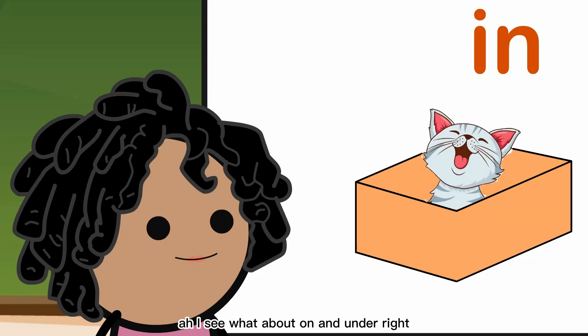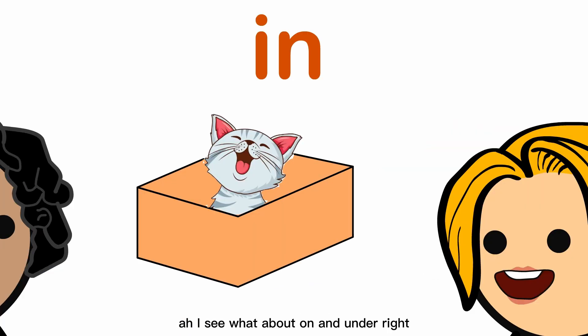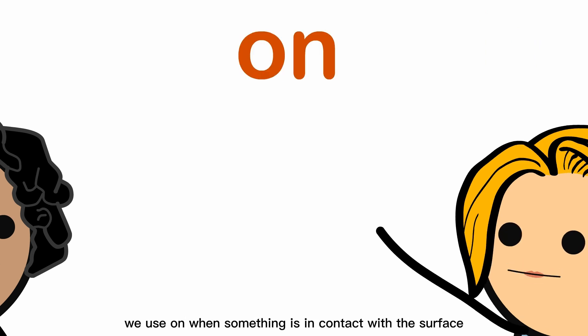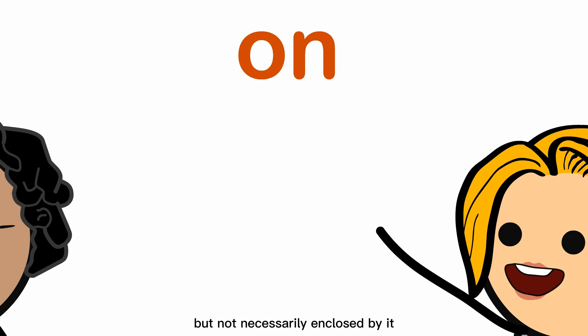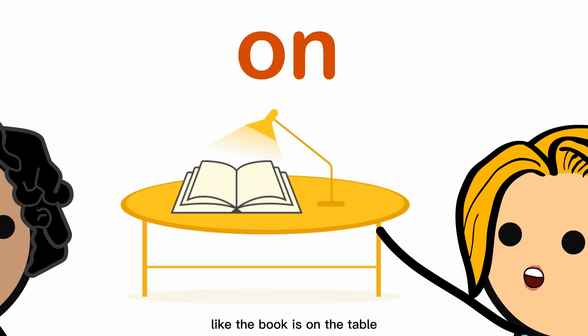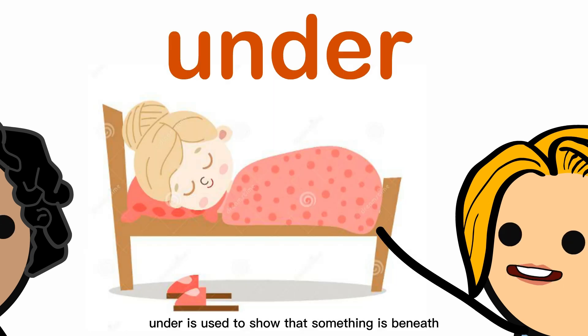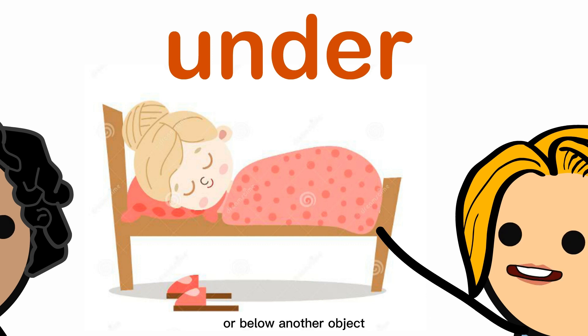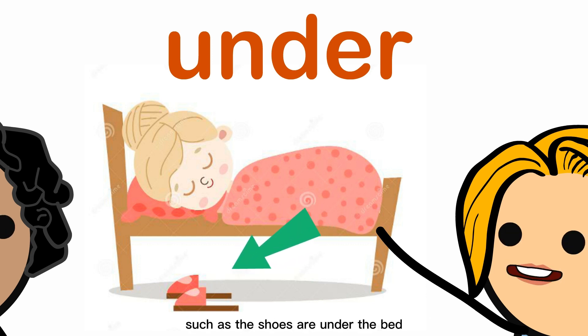I see. What about 'on' and 'under'? We use 'on' when something is in contact with a surface but not necessarily enclosed by it, like the book is on the table. On the other hand, 'under' is used to show that something is beneath or below another object, such as the shoes are under the bed.